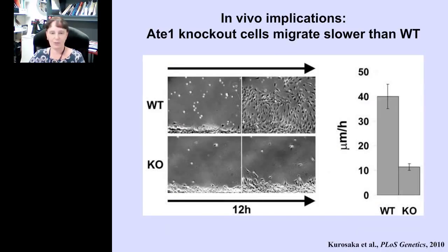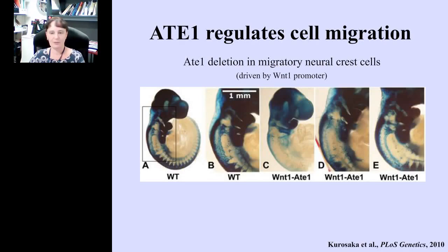Our conclusion is that arginylation is specific to beta-actin because of the unique structure of its mRNA, mediated entirely by silent substitutions and not amino acid sequence differences. This adds another piece to the puzzle — cell migration is driven by mRNA-dependent beta-actin arginylation. Finally, I wanted to show you how this applies in vivo. If beta-actin is so important for cell migration, it should affect cell migration in the body. We compared directly the rate of migration of wild-type and ATE1 knockout cells, and found that wild-type cells migrate about four times faster than knockout cells.